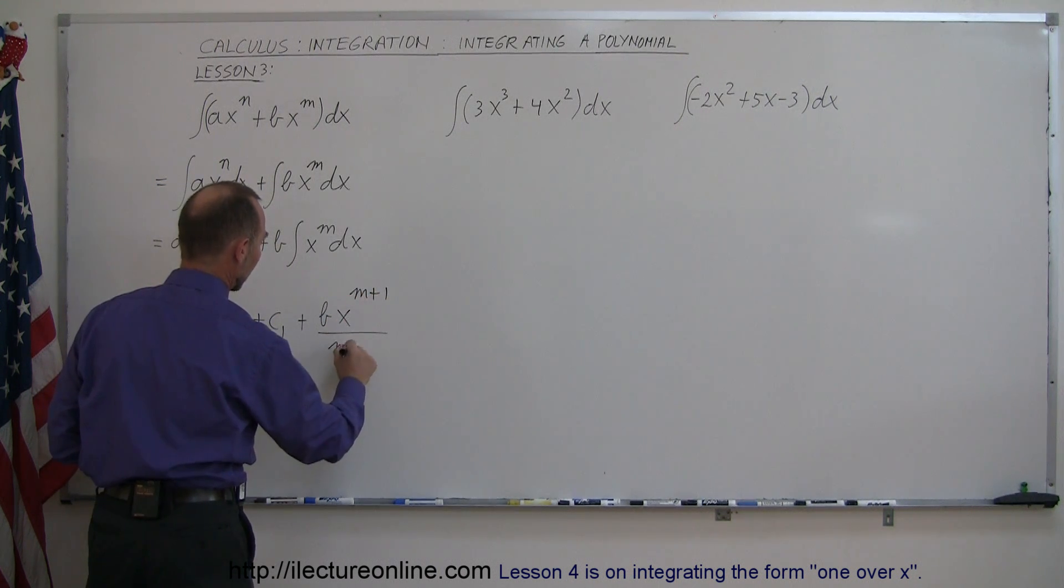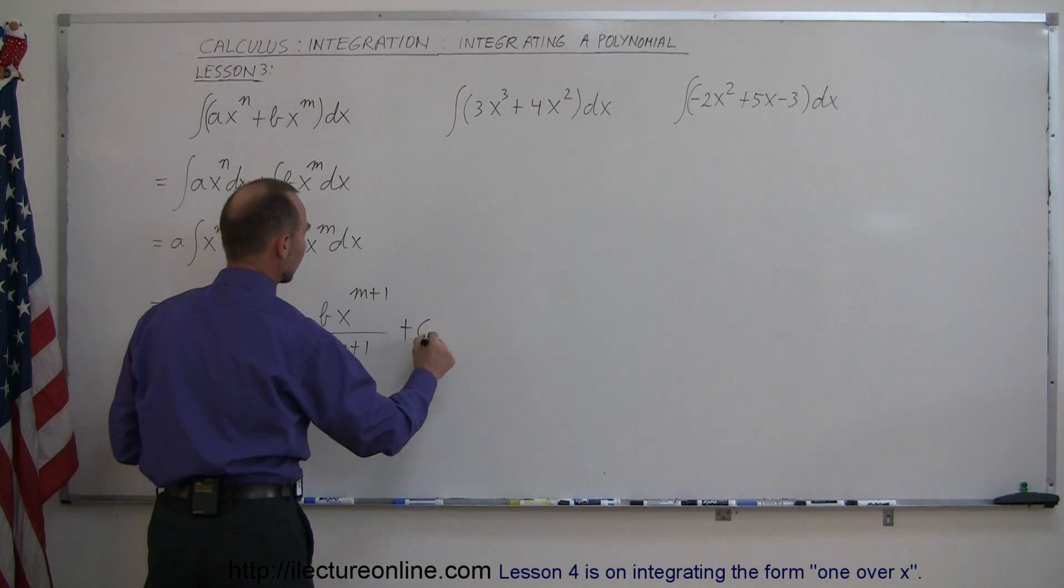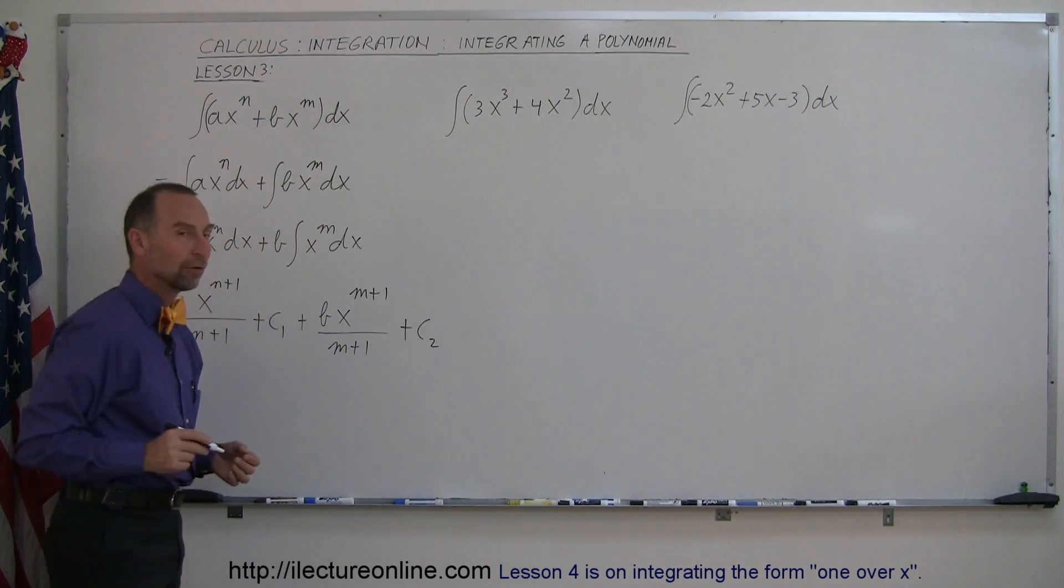We add one to the exponent, then divide by the new exponent, m plus 1. Then we also add a constant of integration, c2, for that integral.